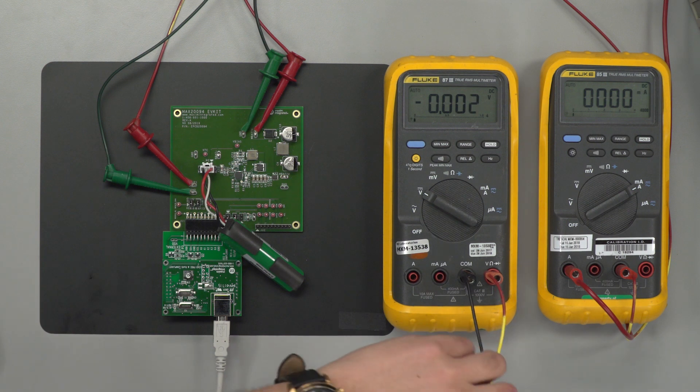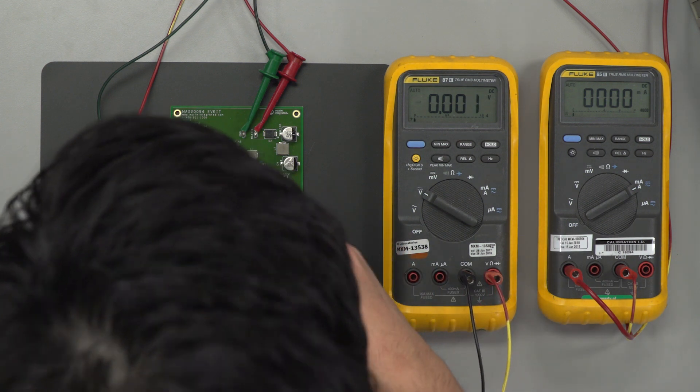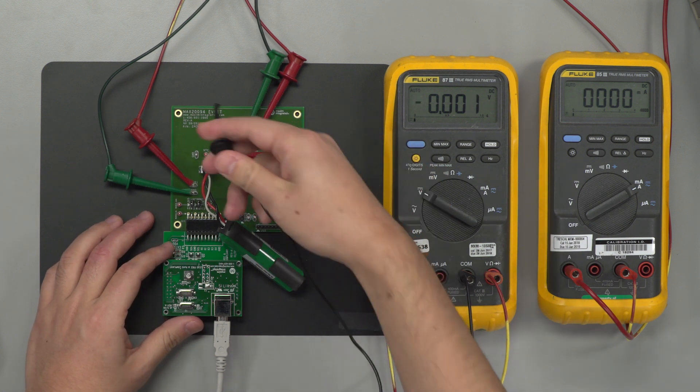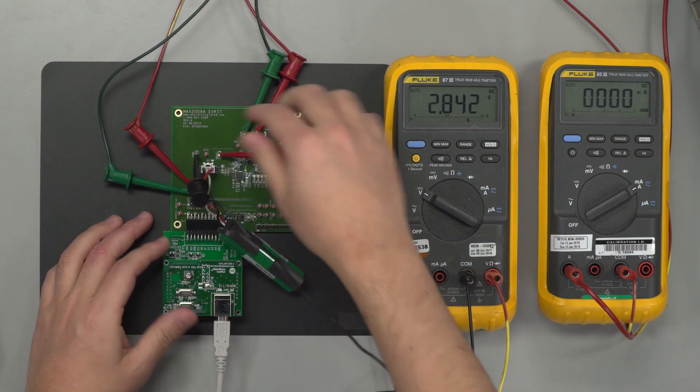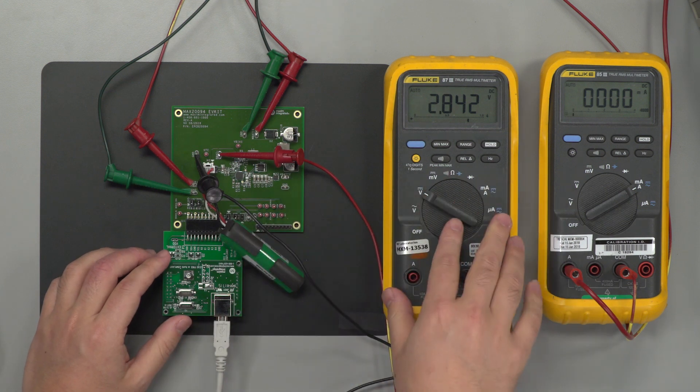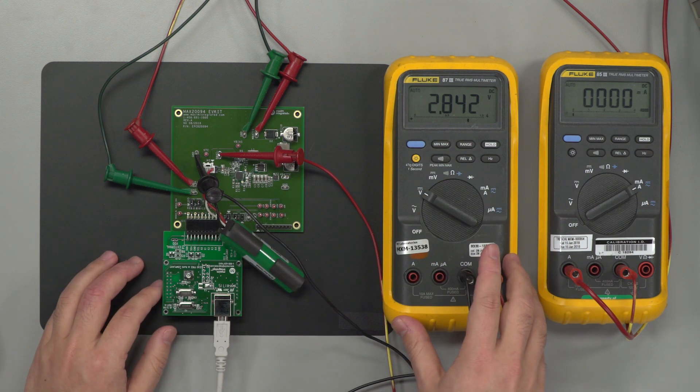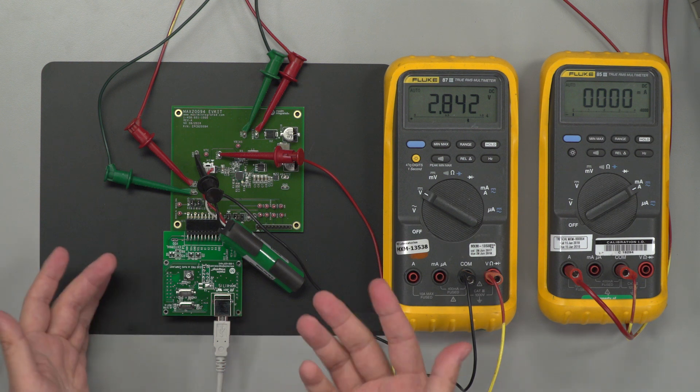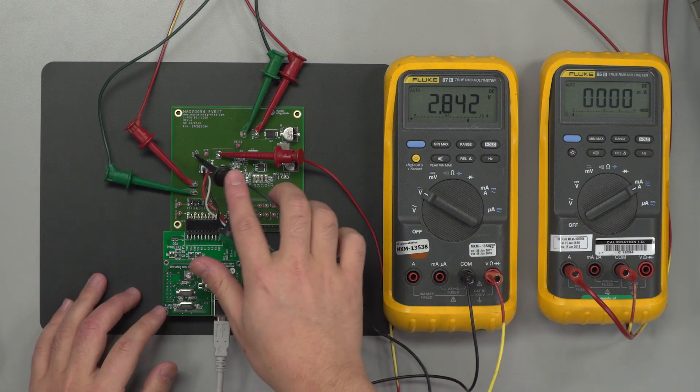Then I'll take the one on the left and put it across the BVAP node here and this is measuring the backup battery's voltage. So you can see that it reads 2.84 volts. The battery is rated for 3.2 volts so we have some charging that we can do which I'll demonstrate right now.